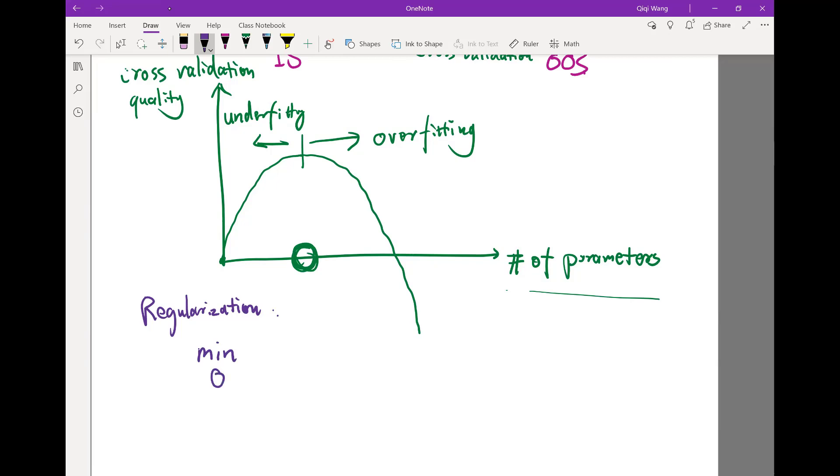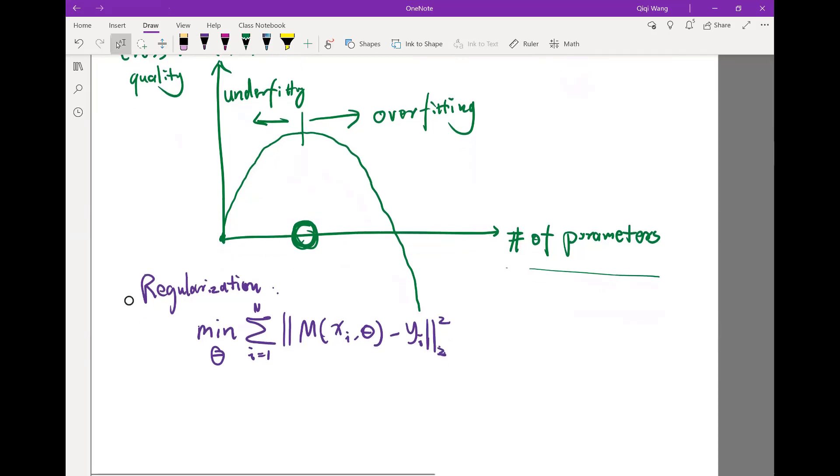So instead of minimizing over the parameter theta, like a function that's summing over all the samples, for example, if we are doing a regression, we are taking the outcome of the model x_i theta minus y_i, let's say the two norm squared as an example. We are minimizing not just this objective function, but plus a proportionality constant times the norm of the theta themselves. So let's just say some general norm.